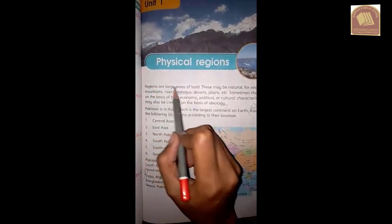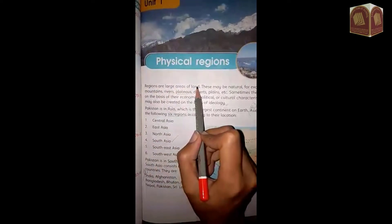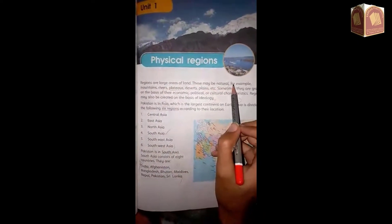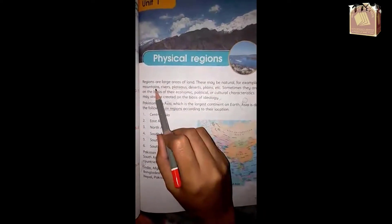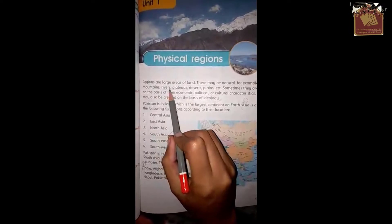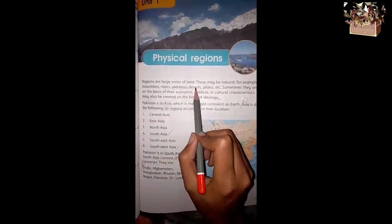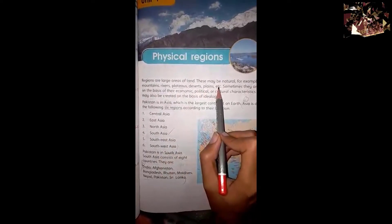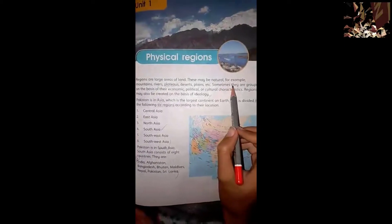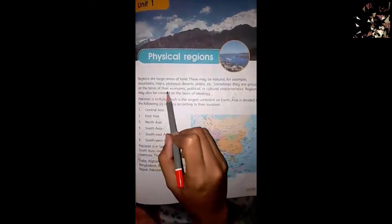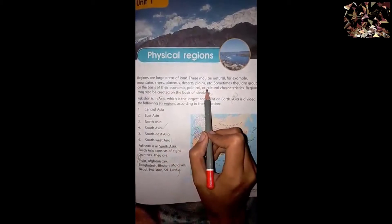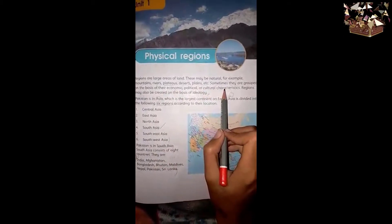Regions are large areas of land. These may be natural, for example mountains, rivers, plateaus, deserts, plains, etc. Sometimes they are grouped on the basis of their economic, political, or cultural characteristics.